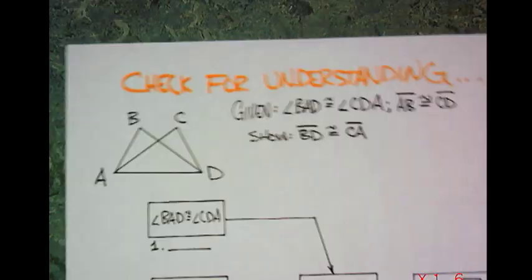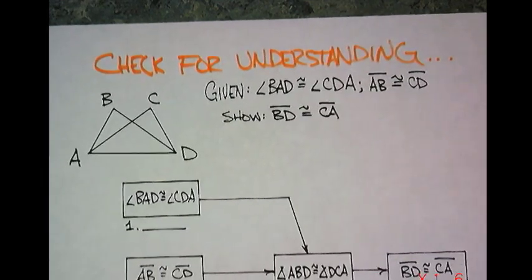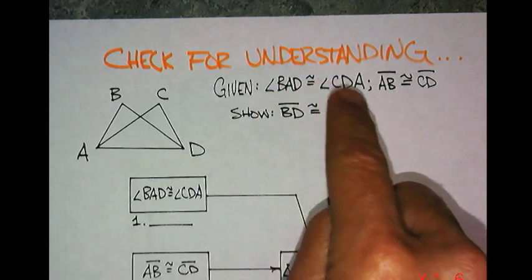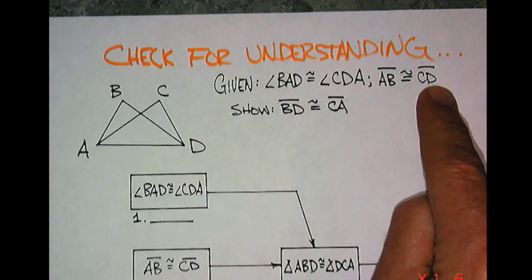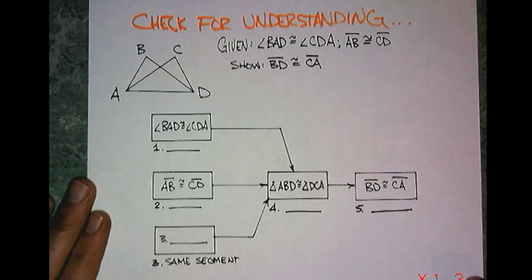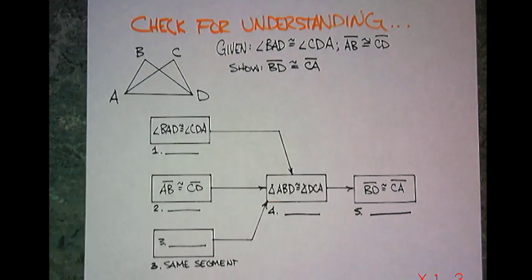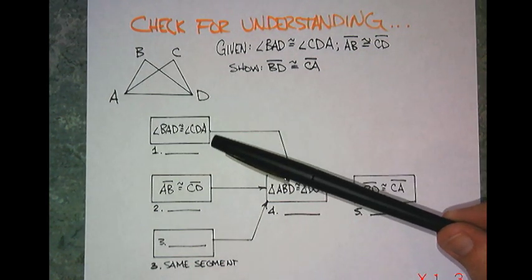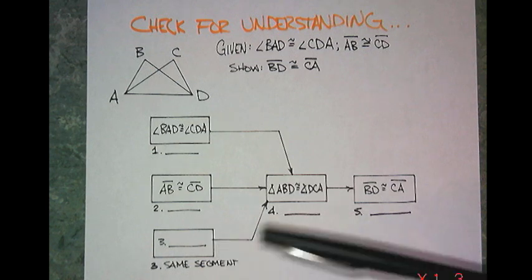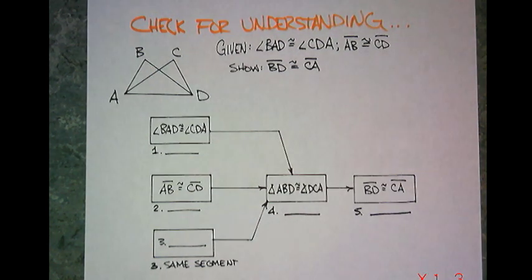We're going to have a lot of fun with this and work on this in class. I've made another one for you. Here's your check for understanding. Here's the given information and the picture. I've got this funky picture: angle BAD is congruent to angle CDA, AB is congruent to CD, and I would like you to show that BD is congruent to CA. I've laid it all out for you. It looks like you need to give a reason for number one, a reason for number two, a statement for number three, and reasons for four and five. Pretty straightforward. If you need help, I bet if you just rewind a little bit you can find the answers.